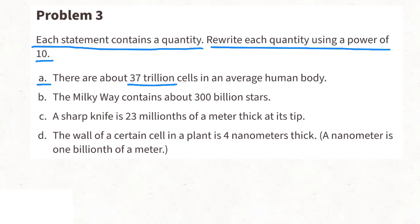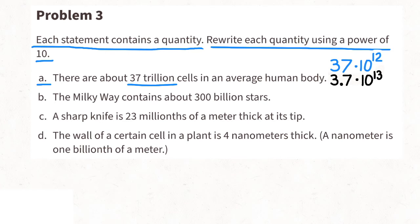A: there are about 37 trillion cells in an average human body. We can rewrite 37 trillion as 37 times 10 to the power of 12. Or in scientific notation, 3.7 times 10 to the power of 13. B: the Milky Way contains about 300 billion stars. We can write 300 billion as 3 times 10 to the power of 9, and that's already in scientific notation.